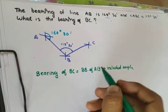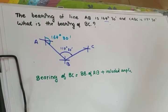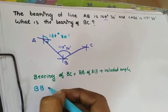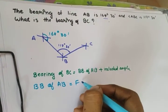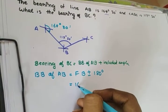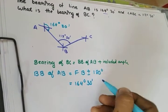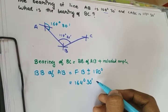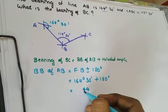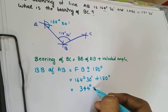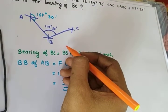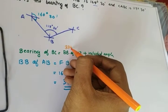First, I will take the back bearing. Back bearing of AB is equal to fore bearing plus or minus 180 degrees. The fore bearing is 164 degrees 30 minutes, so we add 180 degrees. The answer is 334 degrees 30 minutes.